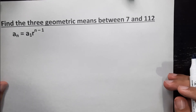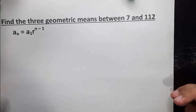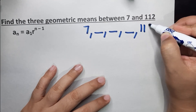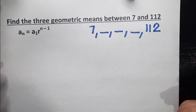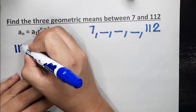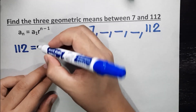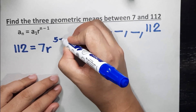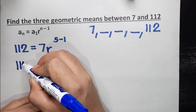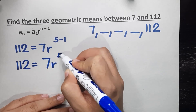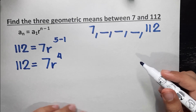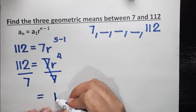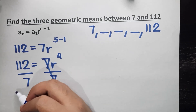Our last example is: find the 3 geometric means between 7 and 112. This time we'll have 3 empty spaces between 7 and 112. Using our formula: a sub n is the last term, so 112 is equal to a sub 1, which is 7, times r raised to the power of 5 minus 1 — since the number of terms is 1, 2, 3, 4, 5. So 112 is equal to 7r raised to the power of 4. Dividing both sides by 7, we get r to the fourth equal to 16.